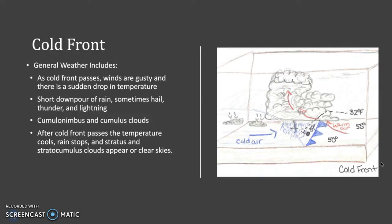Now let's get into fronts. The first front is a cold front. As you can see in the drawing, there is a cumulonimbus cloud, though cumulus clouds can also be present. The weather that occurs with a cold front is usually a short downpour of rain, sometimes hail — as cumulonimbus clouds create hail because of the updraft — and there can be thunder and lightning.